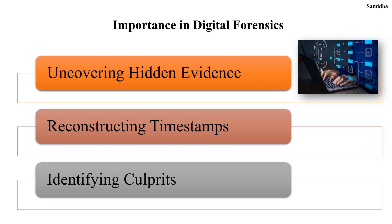Next is reconstructing timestamps. Timestamps and logs often reveal important information like when the file was created, when it was modified or when it was last accessed. Next is identifying culprits — the file permissions, user activity and logs can specify potential suspects.